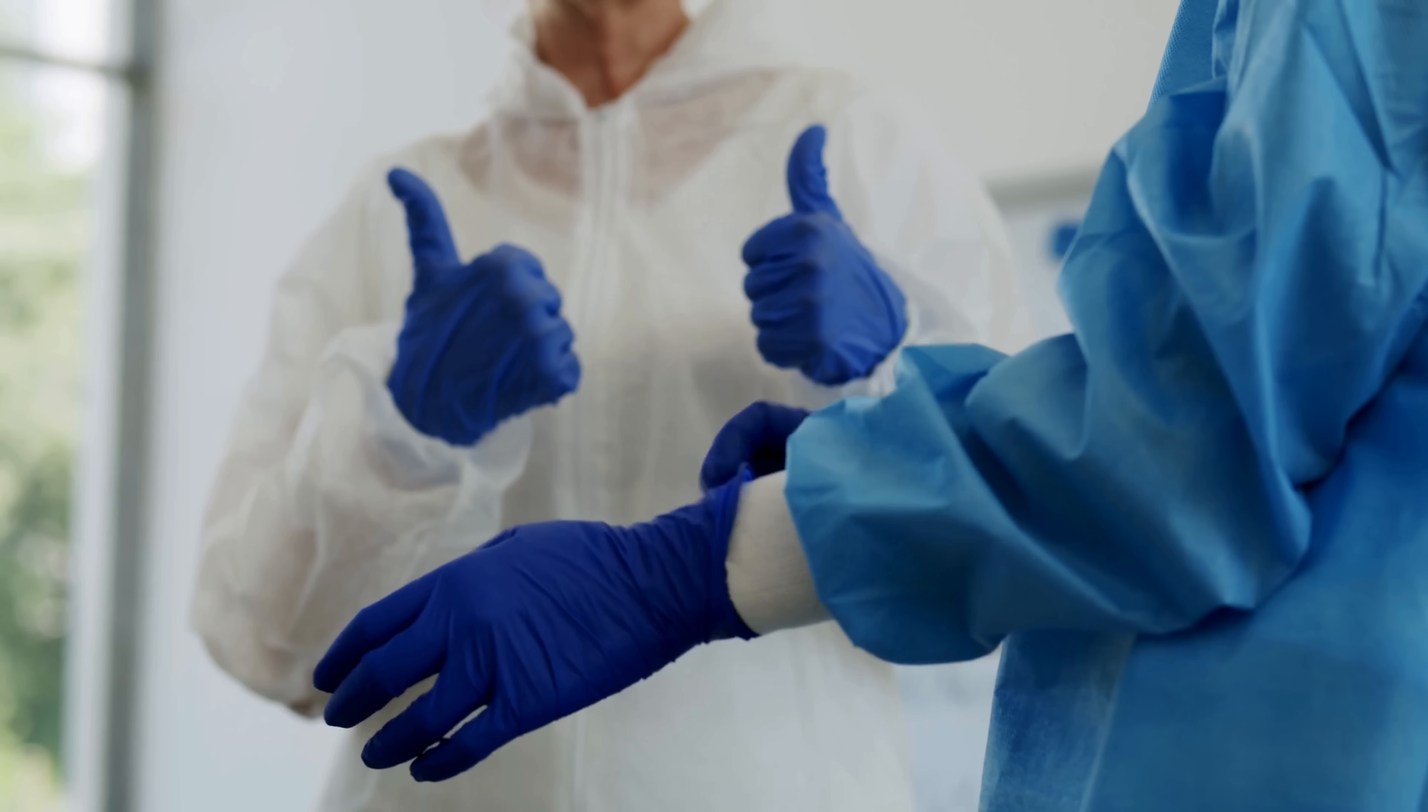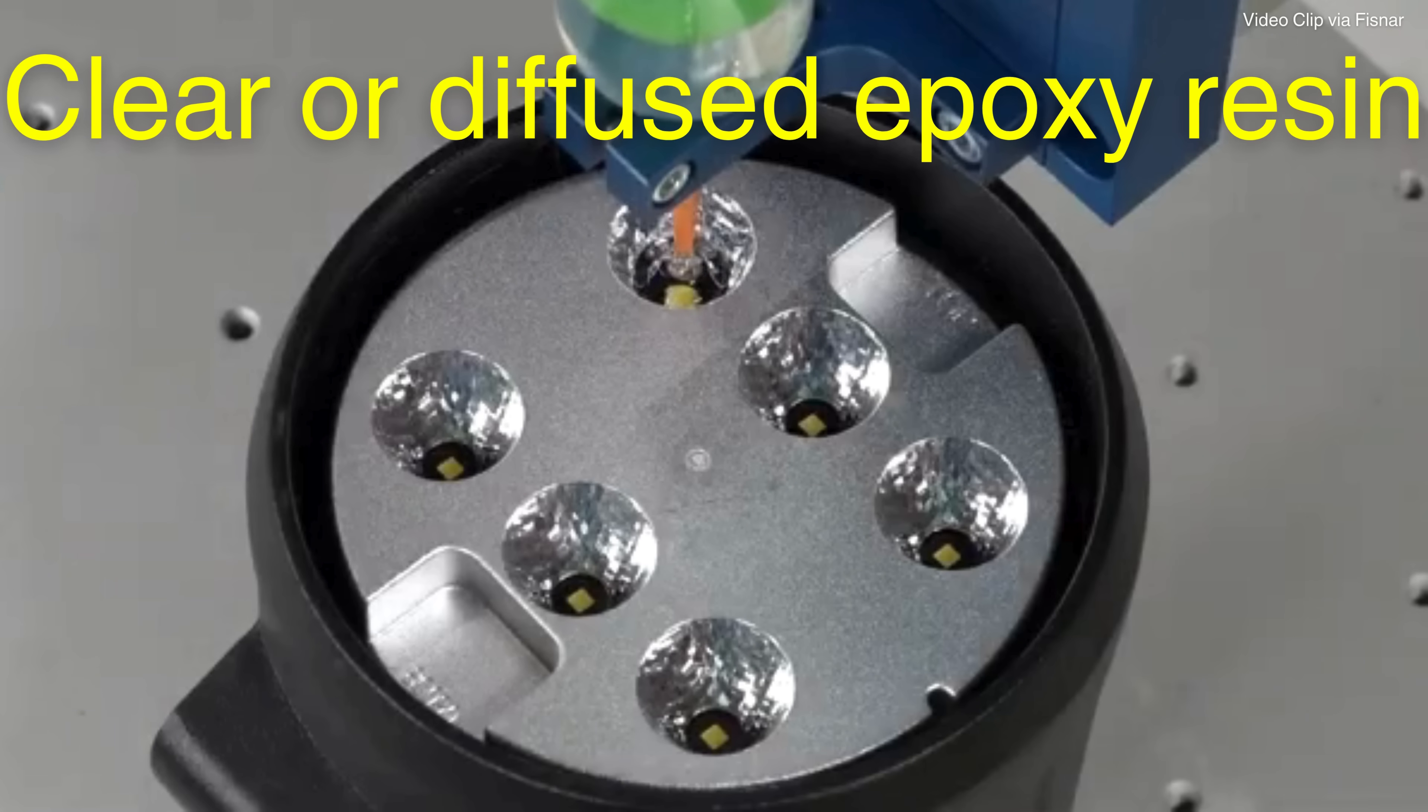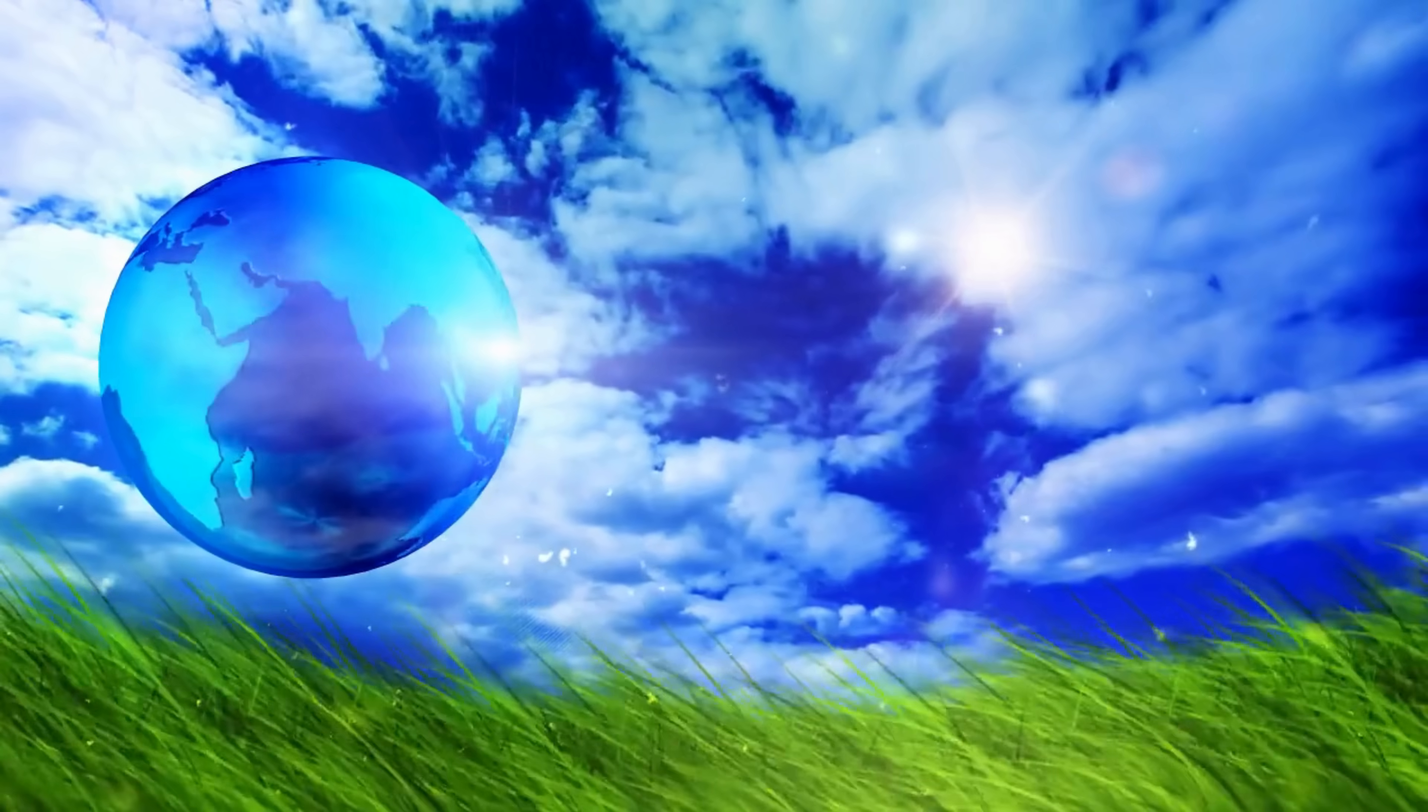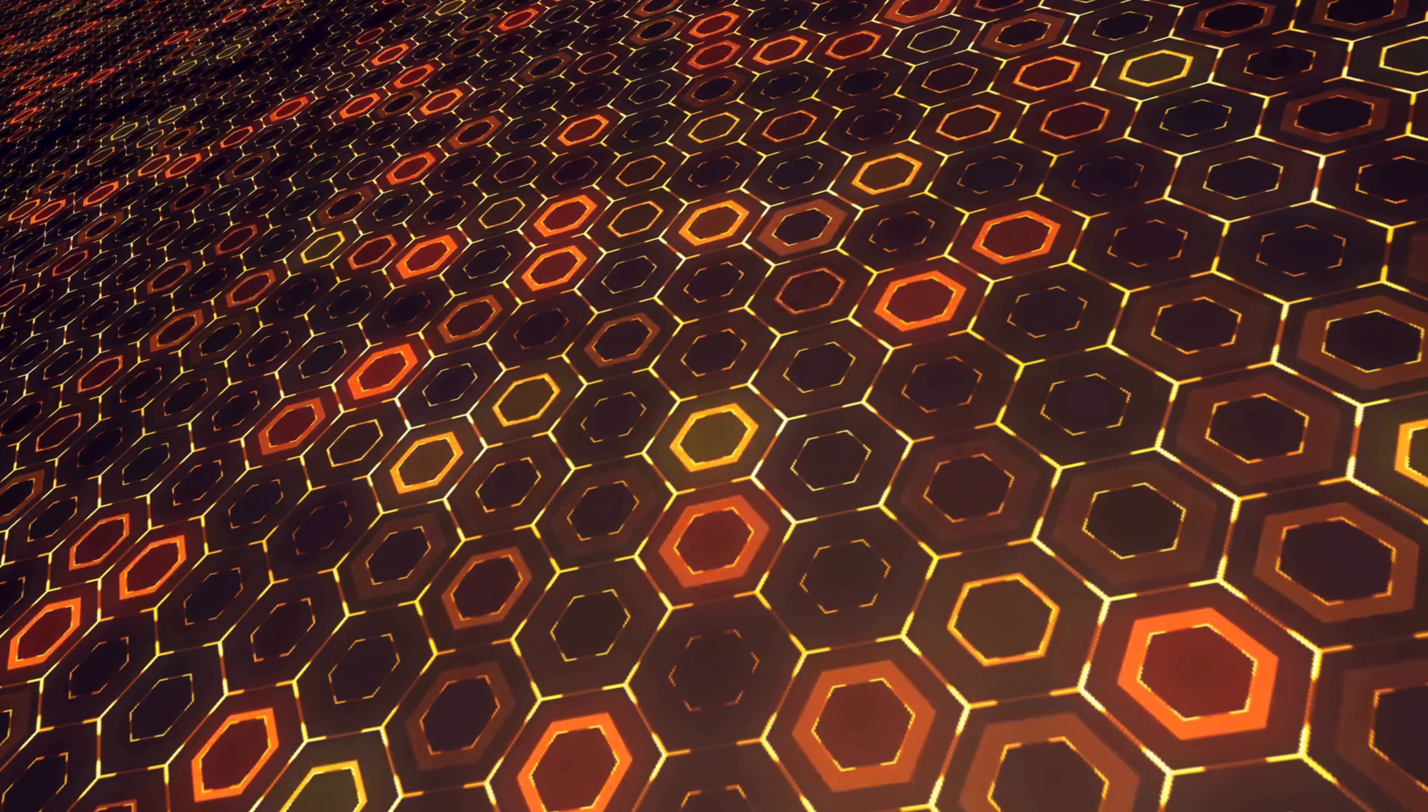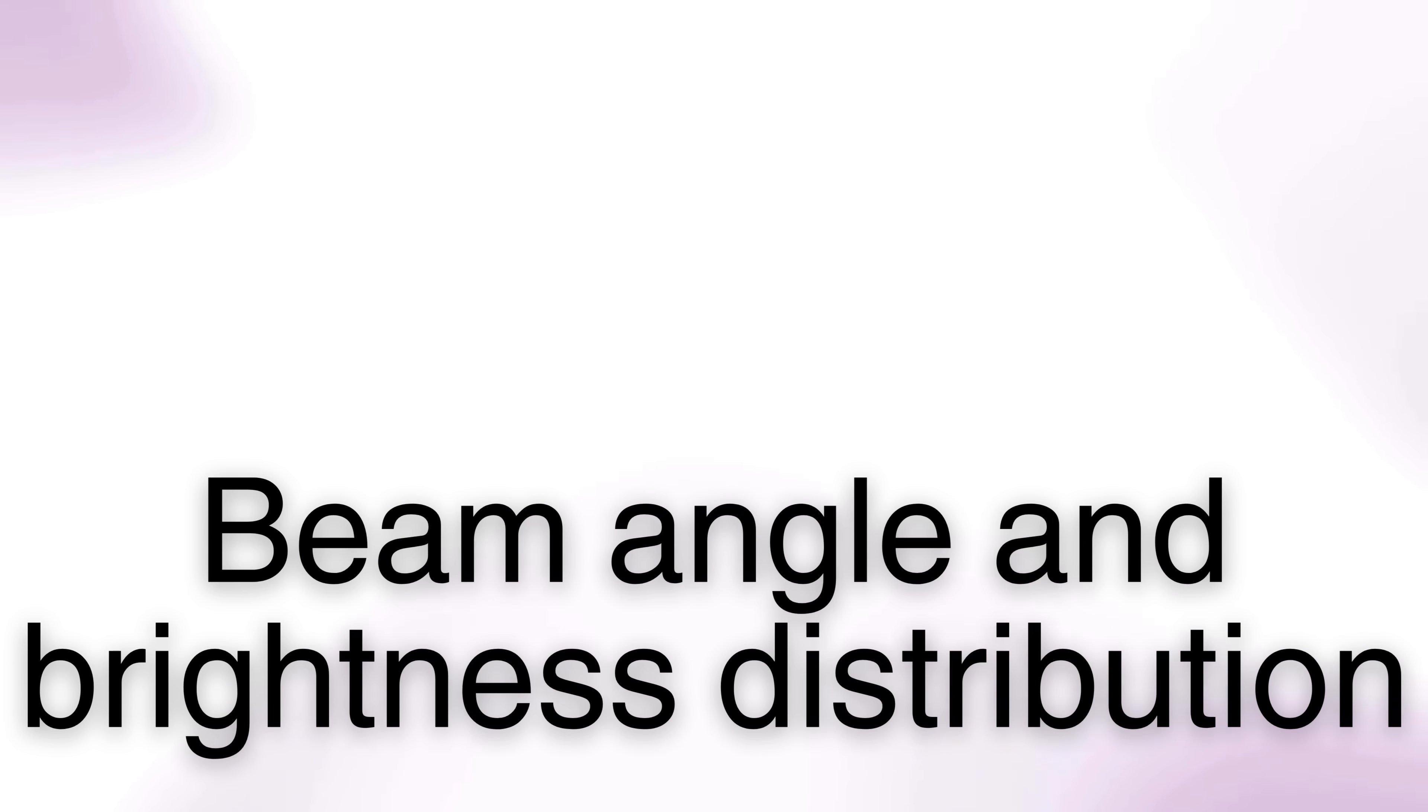To protect the delicate LED chip and improve its light output, the LED is encapsulated in a clear or diffused epoxy resin. This encapsulation serves multiple purposes. It shields the LED from environmental factors, enhances light dispersion, and improves durability. The shape of the encapsulation also plays a role in controlling the direction of the emitted light, influencing factors such as beam angle and brightness distribution.